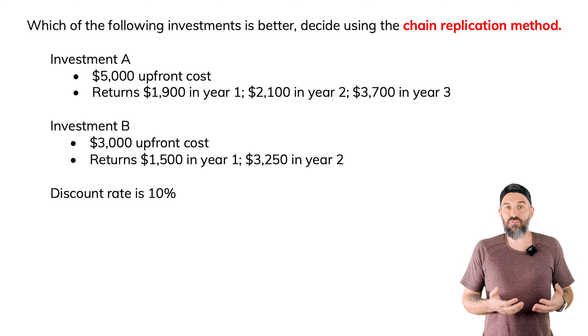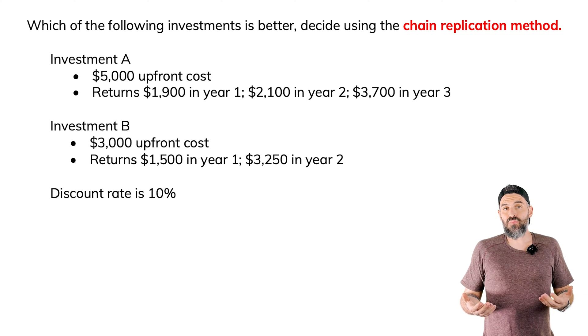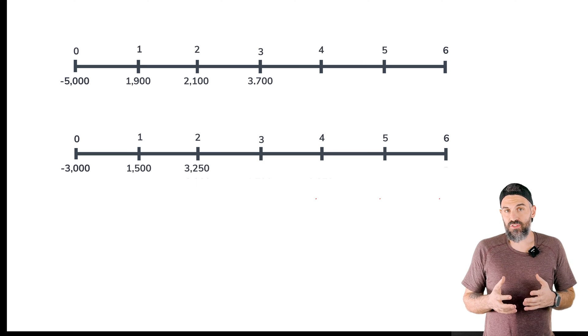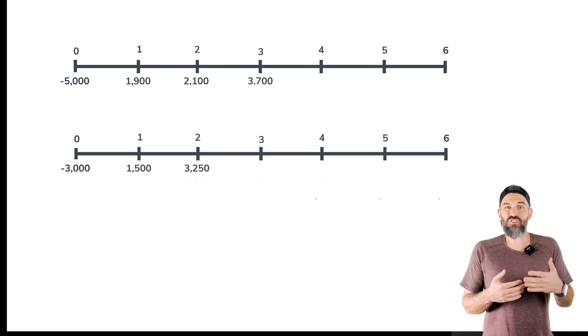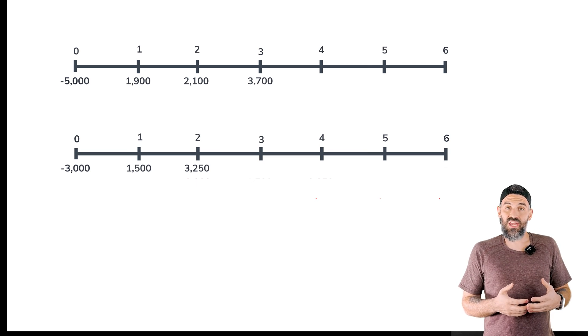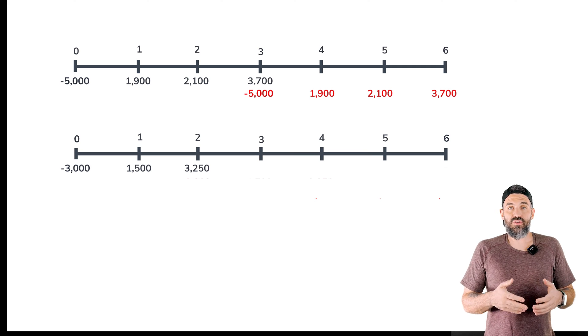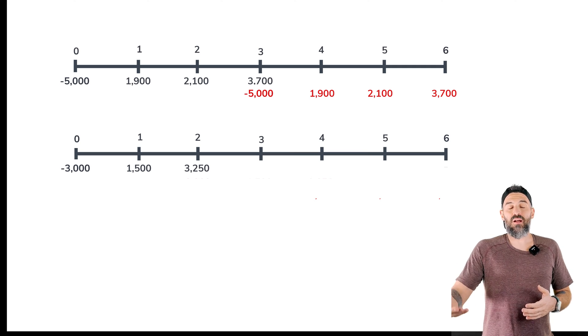So what is the lowest common multiple of three and two? Well, six. So the way the chain replication method works is we're going to repeat the investment until it reaches that number of years. So for investment A we're going to repeat it two times. For investment B we're going to repeat it three times.